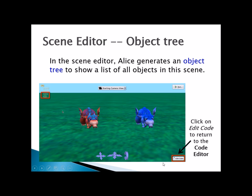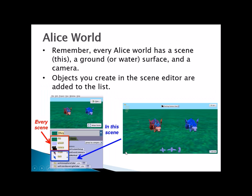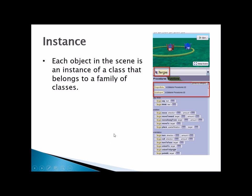You can also go back to your code by clicking on the edit code button. You'll find the object tree here and also on the left-hand side in the methods panel. Every world has the ground and the camera. The methods panel will list each object and the different methods or actions that object can do. When you create an object, you're creating an instance of that class. You can give it a name and it will show you what class it's from — for example, a dragon baby that's part of the quadruped superclass.